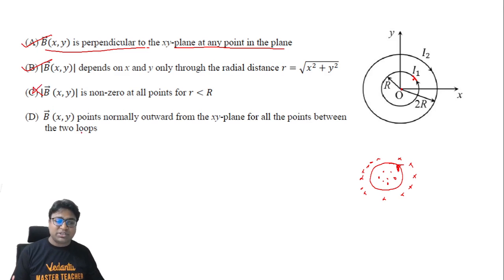Option D says that B points normally outward from the XY plane for all points between the loops. Now if I'm thinking about points which lie between the loops, the contribution from the outer loop would be into the screen and the contribution from I1 would also be into the screen. So they are not going to cancel each other, rather they are going to reinforce each other. So option D is also incorrect.